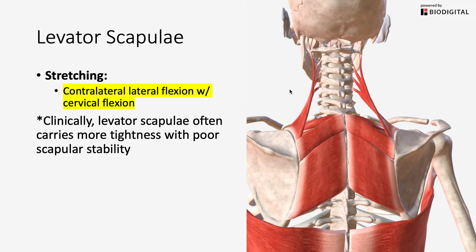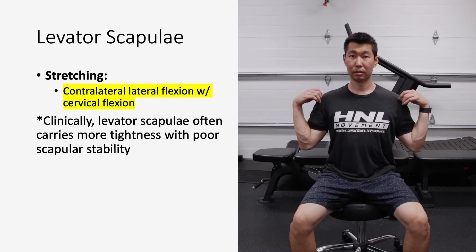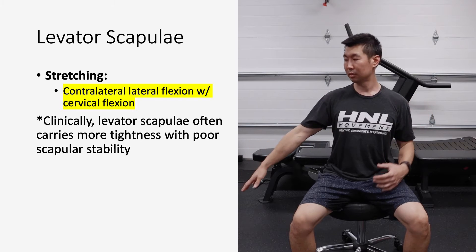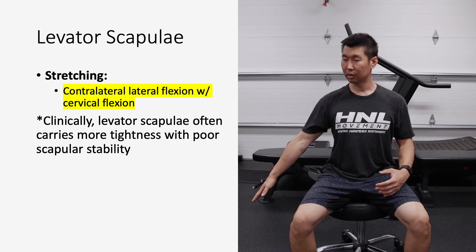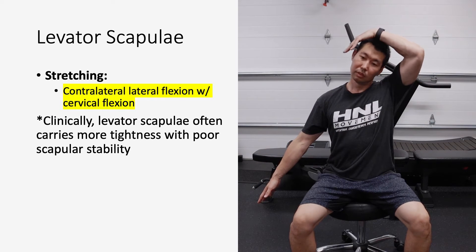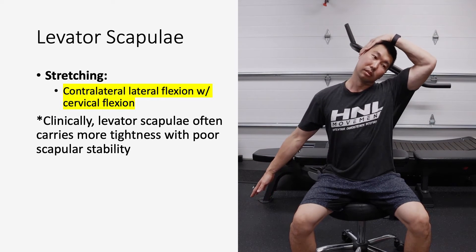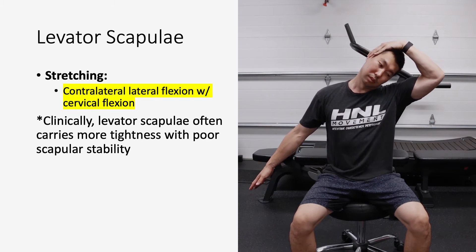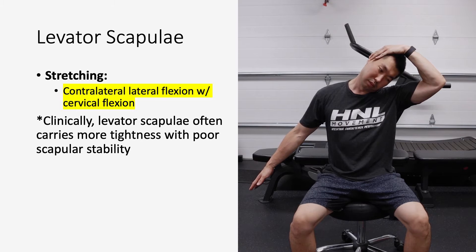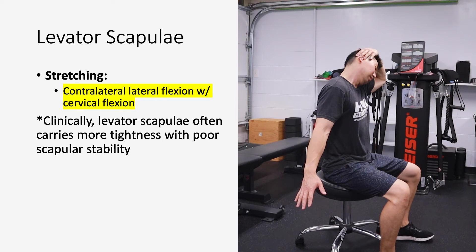To stretch your levator scapulae, you're going to go into contralateral lateral flexion and some cervical flexion looking downwards, and that is going to stretch out your levator scap on the opposite side.